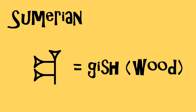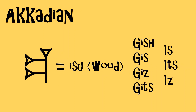Later on, cuneiform was adapted for writing the Akkadian language, and this is where things get complicated. In Akkadian cuneiform, every sign can stand for a whole word just like in Sumerian, or it can stand for a syllable — and each sign can be read in lots of different ways. There are hundreds and hundreds of signs. It's all very complicated and extremely difficult to learn.